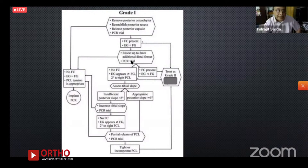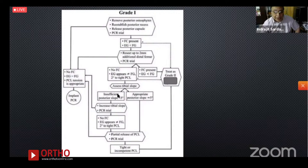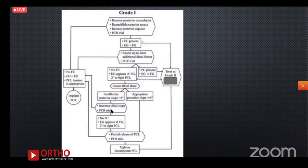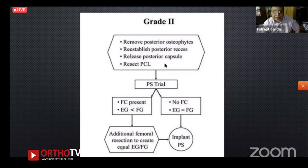For Grade 1: if the PCR trial shows no flexion contracture and gaps are equal, proceed to implant. If tibial slope is insufficient, increase it. If gaps are still unequal after slope adjustment, partially release the PCL and reassess. For Grade 2: perform a PS trial. If the extension gap is less than the flexion gap, do additional femoral resection until gaps are equal, then implant PS. Most surgeons switch to PS for Grade 2 and above, as PCL balancing becomes unreliable.